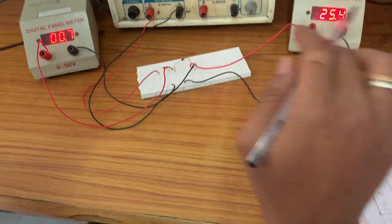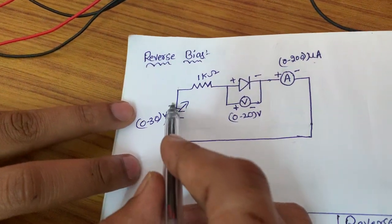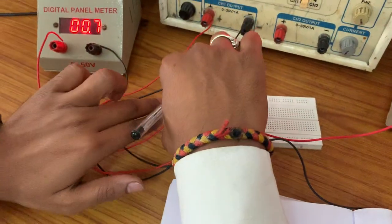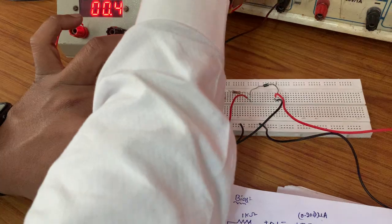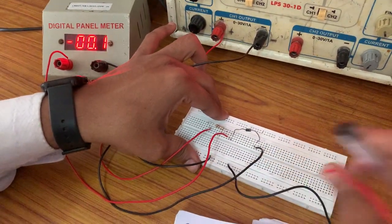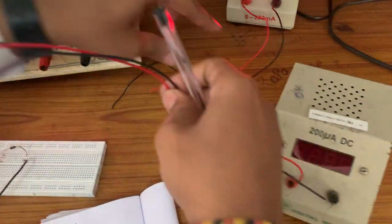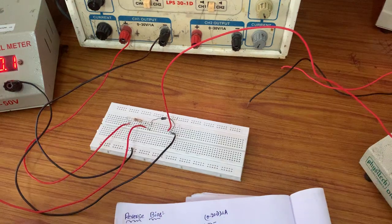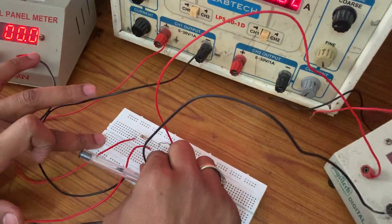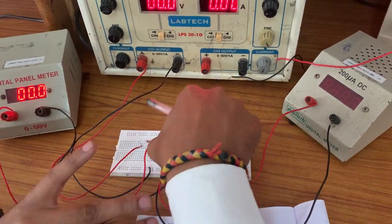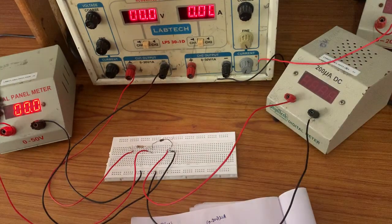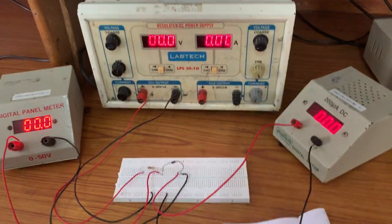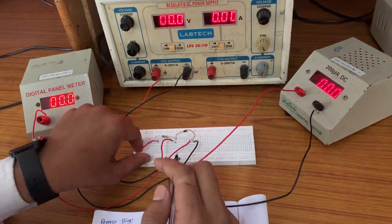In the reverse bias, we just reverse the terminals. The circuit diagram for reverse bias has the negative terminal connected to the P-type and the positive terminal connected to ground. We reverse the RPS terminals and replace the milliammeter with a microammeter, because in reverse bias we get very small currents. In forward bias we use milliamps; in reverse bias we use microamps. All other connections remain the same.